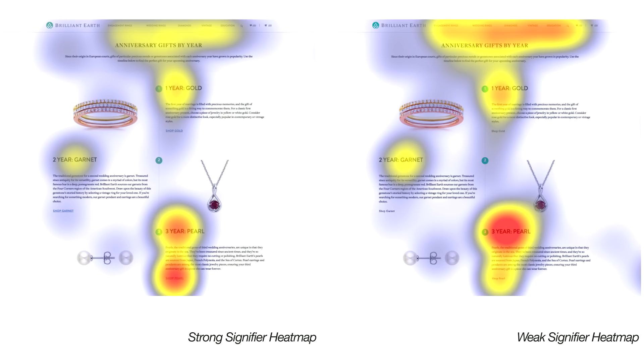We also looked at heatmap visualizations, which show where many users looked at an interface. The red areas indicate where people looked the most frequently and the longest. In six out of the nine pairs, we saw differences in the heatmaps.